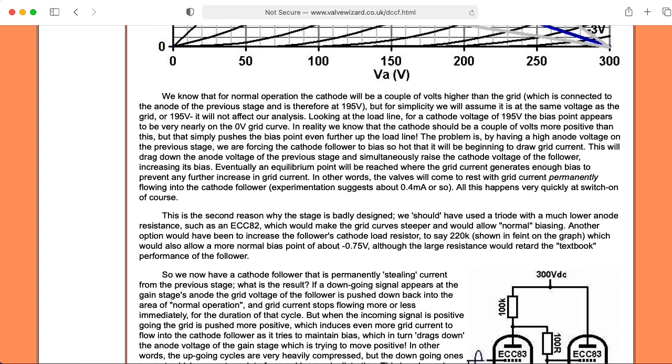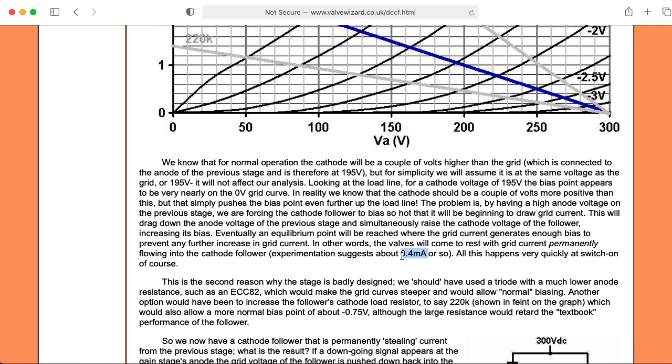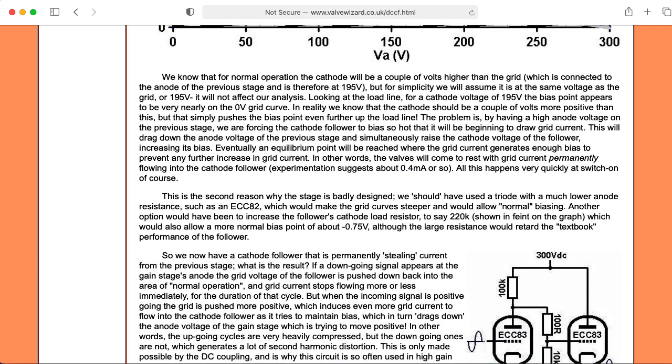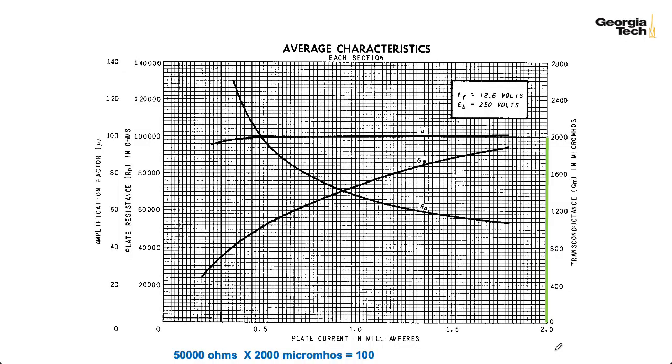Our cathode current is going to be the plate current plus the grid current. Now, in the particular example that's worked out here, that's given as 0.4 milliamps. We can't necessarily take that value and translate it to the Mesa boogie because the various resistance values are different here. But let's say it's something like 0.5 milliamps. That means I was off by 0.5 milliamps when I used this 2 milliamp mark. And we really want to use something more around the 1.5 milliamp mark. Although that wouldn't actually change rp that much. The basic calculations would be in the ballpark-ish.